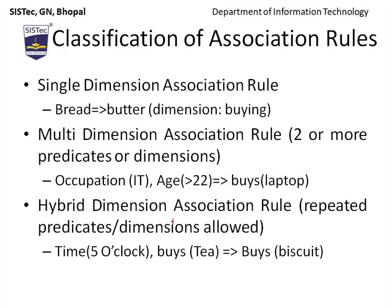Now let's discuss the classification of association rules. Association rules are classified into 3 categories. The first is single-dimensional association rule, where a single dimension exists — bread and butter are normally called predicates, so here there is a single predicate. Between them only one relation and one dimension appears — for example, if someone took bread, they took butter. This type of association rule is called single-dimensional.